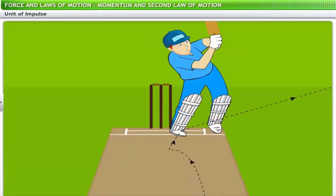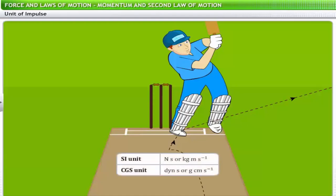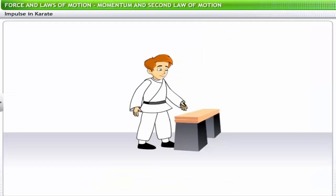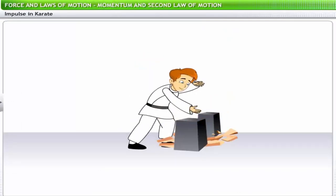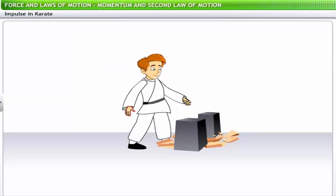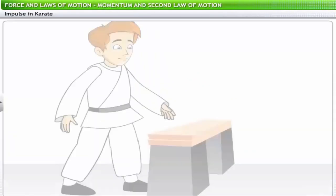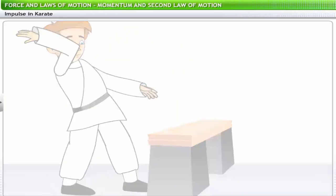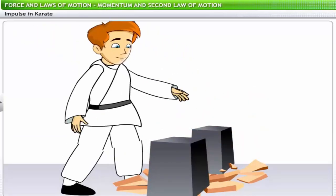As the impulse of a body is numerically equal to the change in its momentum, the unit of impulse can also be expressed by the unit of momentum. Thus, the SI and CGS units of impulse are newton second and dyne second respectively. In karate, a man can break a brick with his bare hands — the high acceleration of the strike provides enough force to his hand to break the bricks. This large force acts on the brick for a short duration, making an impulse, which helps to break the bricks.